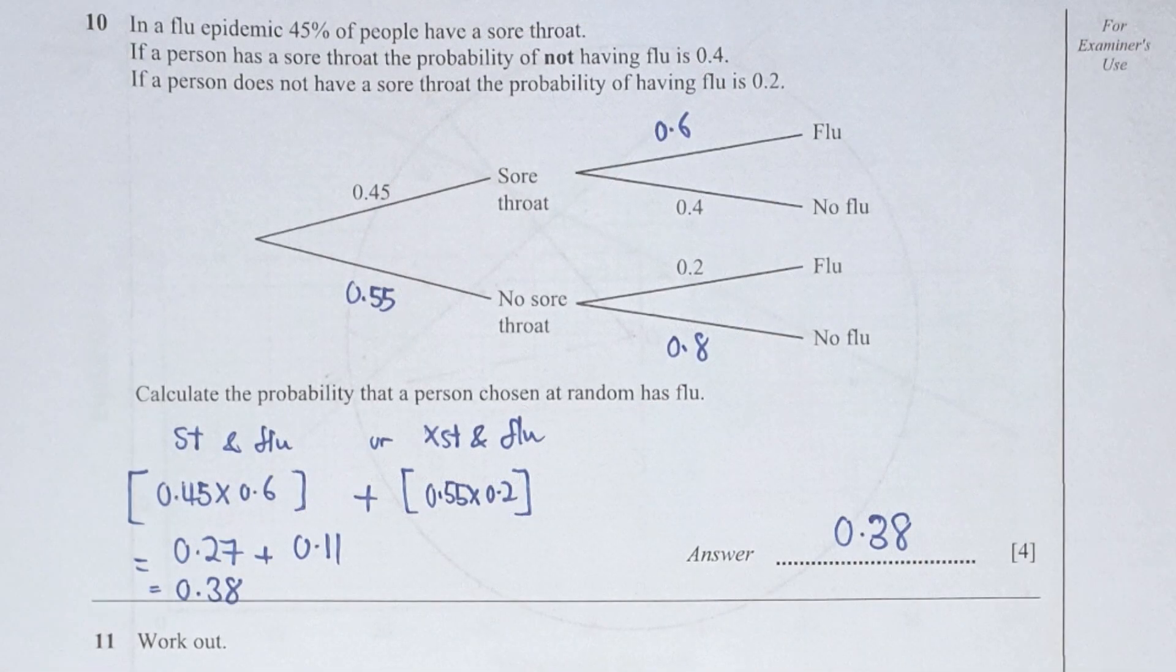For question 10, sore throat is 0.45, no sore throat would be 0.55. And with sore throat, no flu is 0.4, which means with sore throat and flu will be 0.6. The other condition is no sore throat and flu is 0.2, and no sore throat with no flu is 0.8. So state the probability that the person chosen has a flu. So it's either sore throat with flu or no sore throat and flu, so 0.45 times 0.6 plus 0.55 times 0.2. The final results will be 0.38.